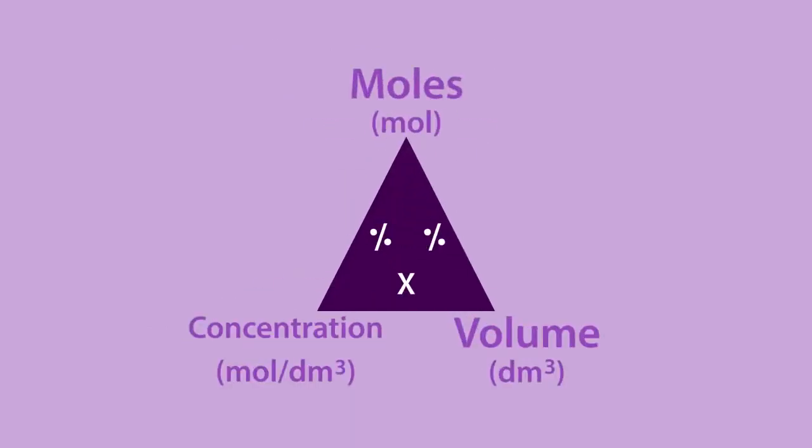You can find any of these quantities by covering up the one you're looking for with your finger. For example, if you cover moles, you can find this by multiplying the concentration by the volume. This is because any two terms on the bottom of a formula triangle are always multiplied together.